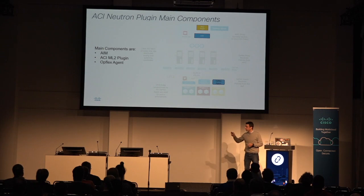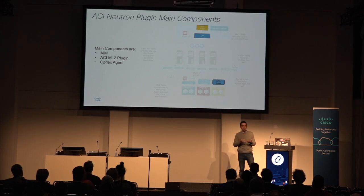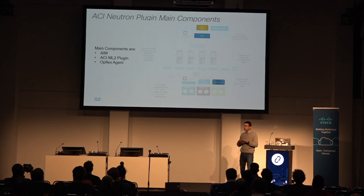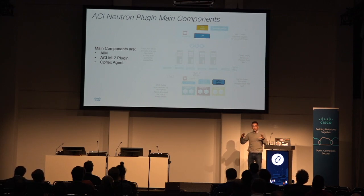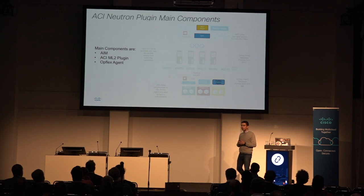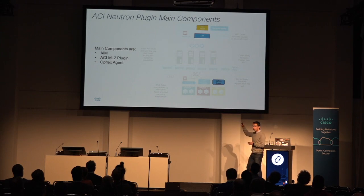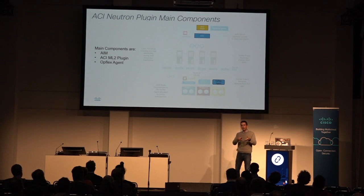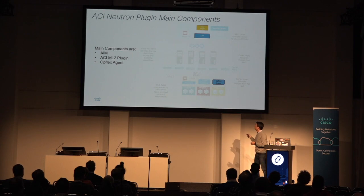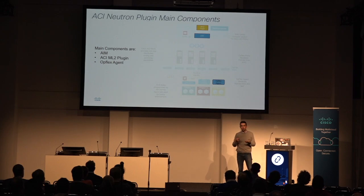The main components of the ACI plugin are three. First, there is the ML2 plugin provided by Cisco ACI — a framework for configuring your underlay switching layer. Second is the ACI Integration Module, or AIM, which makes RESTful API calls to create ACI objects in your ACI architecture. Third is the OpFlex agent, deployed on each and every compute node in your OpenStack architecture.